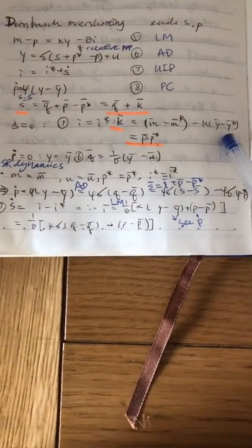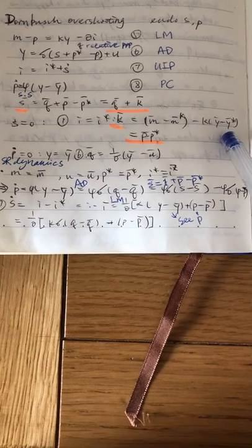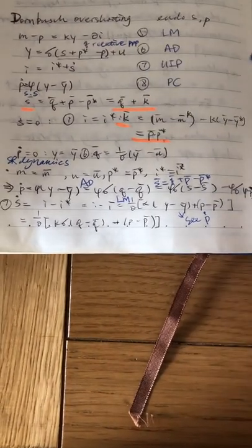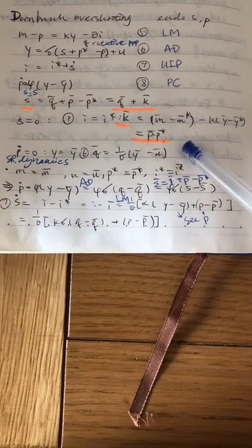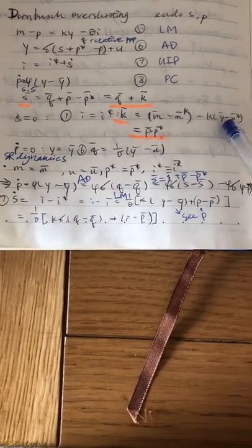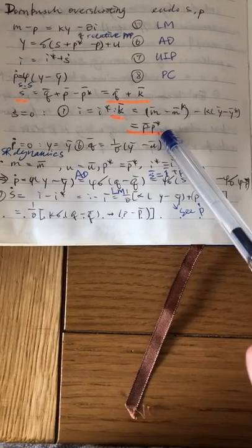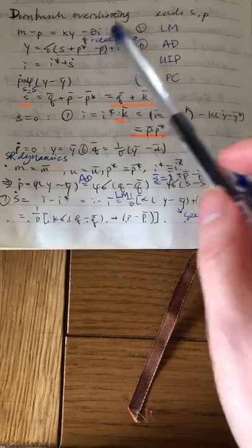then we will find from the LM equation that the difference in these two objects will be equal to P minus P star because we don't have the I here.